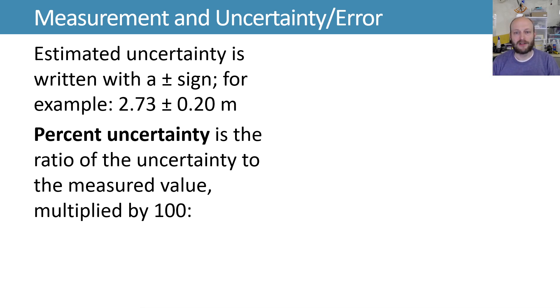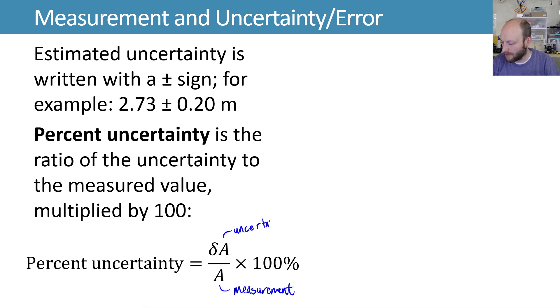Percent uncertainty is the ratio of the uncertainty to the measured value multiplied by 100. You've got fractional uncertainty, where fractional uncertainty would just be this. So here we've got A as our measurement, and this lowercase delta A is the uncertainty in the measurement A. And so the fractional uncertainty is you just take this fraction, and then percent uncertainty is you turn that into a percentage by multiplying by 100 percent.